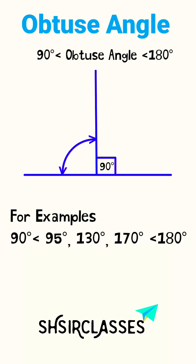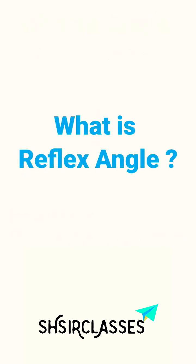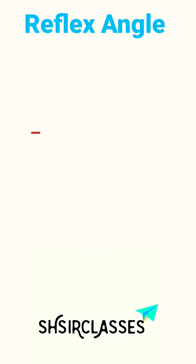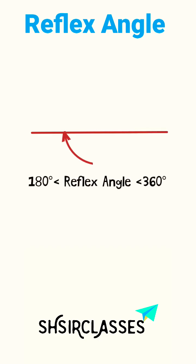All these angles are greater than 90 degrees and less than 180 degrees. Next, what is a reflex angle? An angle is said to be reflex if the angle is greater than 180 degrees and less than